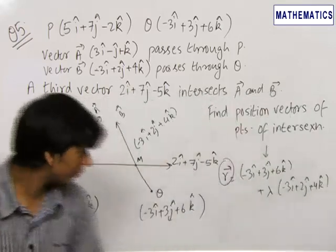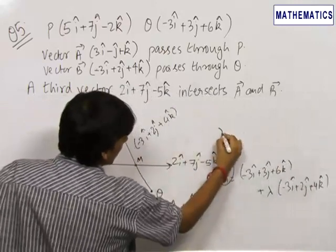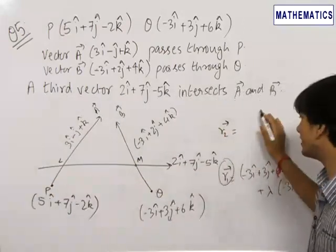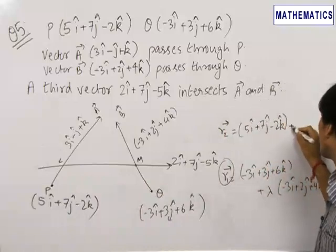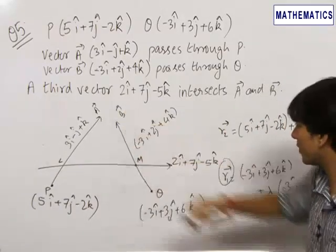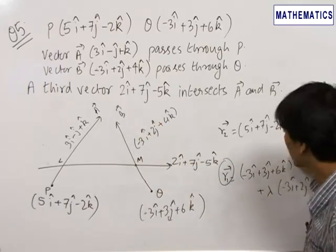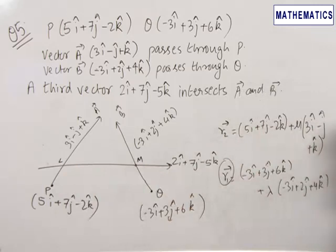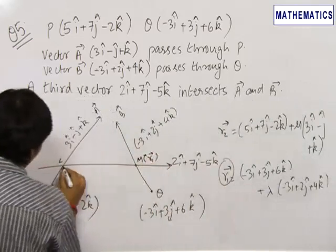This is the position vector of any general point on the line passing through Q — let this be r₁. Similarly, the equation of the line passing through P, let this be r₂, is written as 5i + 7j − 2k + μ(3i − j + k). For some value of μ this gives us point L, and for some value of λ this gives us point M.